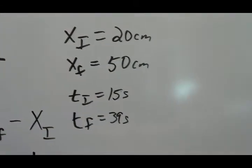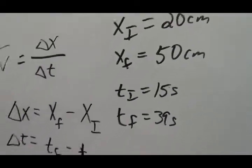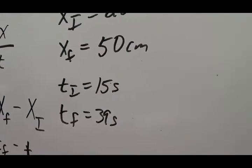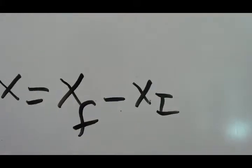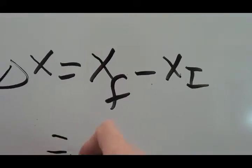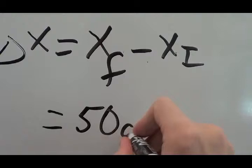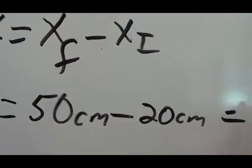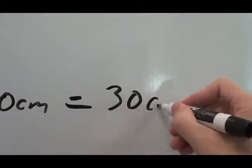Delta x equals xf minus xi. That's how we define displacement. The final position was 50 centimeters. The initial position was 20 centimeters. So we travel a total of 30 centimeters.